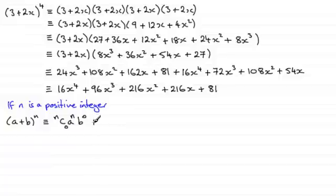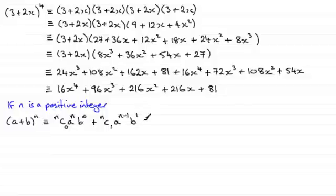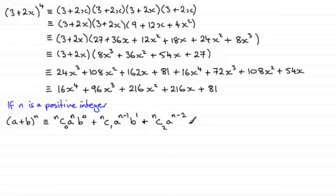For the next term we do nC1, then reduce the power on a by 1, so it's now a to the power (n − 1), and increase the power on b by 1, so it's now b to the power 1. The next term will be plus nC2, multiplied by a to the power (n − 2) — reducing this by 1 power — and then b squared.